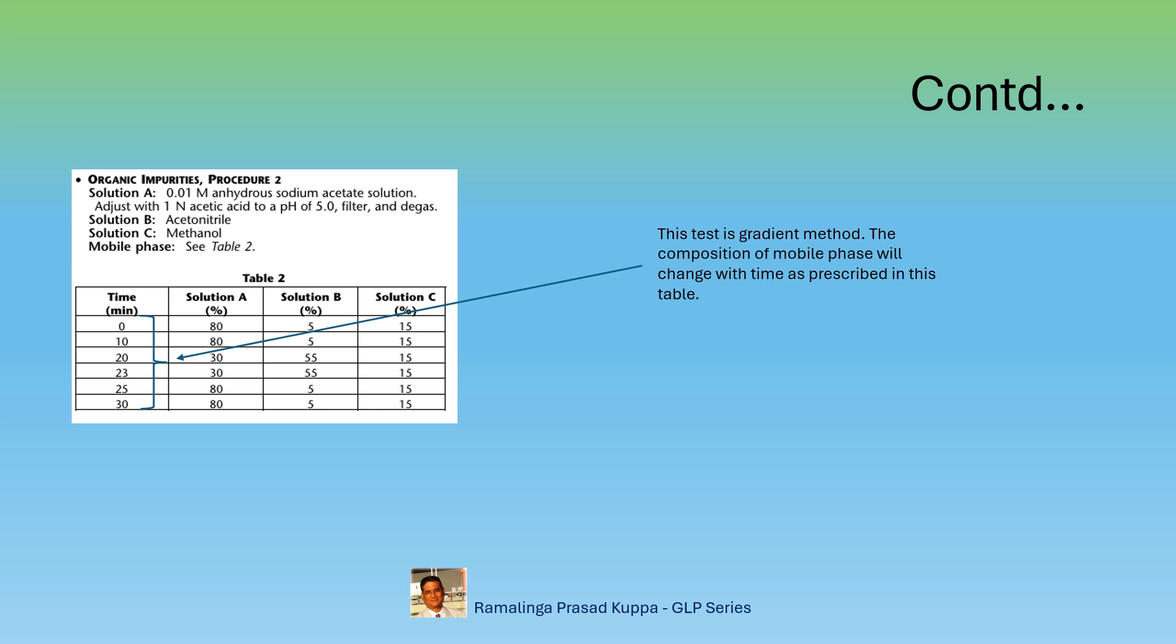This procedure 2 involves gradient program of three different mobile phases with different concentration ratios at different times. In the isocratic system, there will be only one combination of mobile phase throughout the analytical run. To avoid any evaporation losses, it is definitely required to seal the mobile phase reservoir with suitable plugs during the entire run.